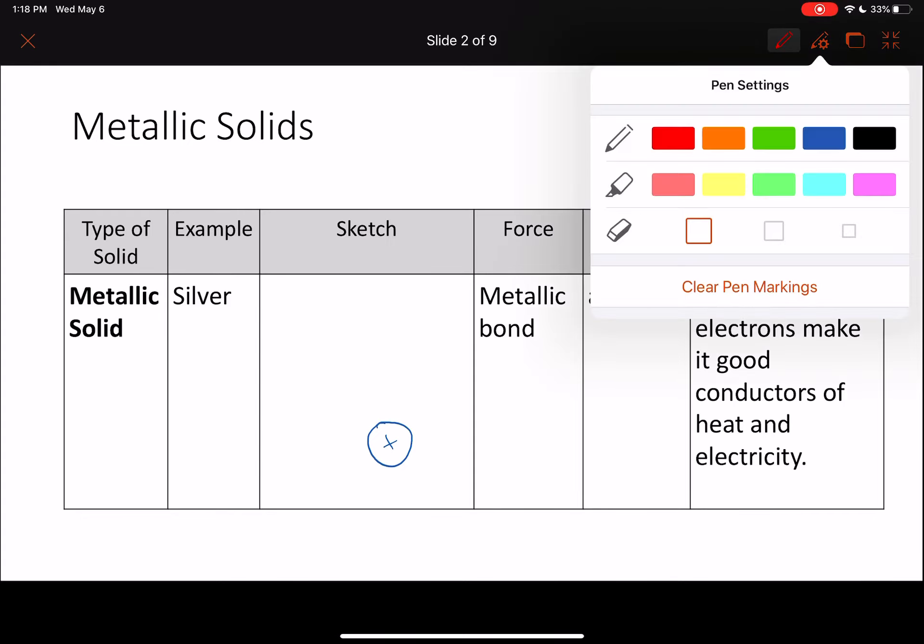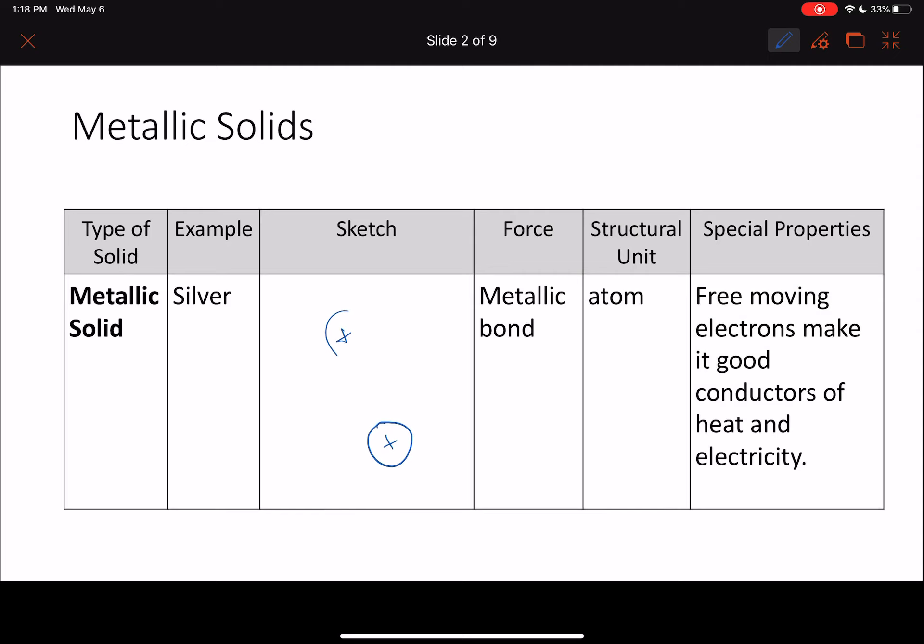For metallic bonds we have our nuclei and the electrons are not actually bound to any particular nucleus. They're just floating around between all the nuclei and they can move freely however they want. We say that these nuclei are set and then surrounded by an ocean or a sea of moving electrons. This is how a metallic bond looks like.